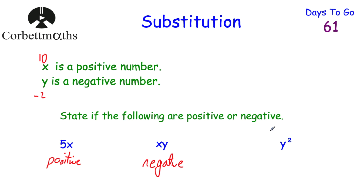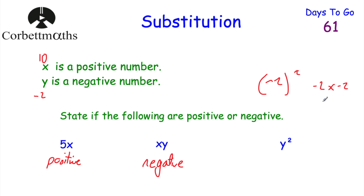Finally, is Y squared positive or negative? Y is negative, and squaring means multiplying it by itself. For example, negative 2 squared is negative 2 multiplied by negative 2. A negative times a negative is a positive, so negative 2 times negative 2 equals 4. Squaring any negative number always gives a positive result, so Y squared is always positive.